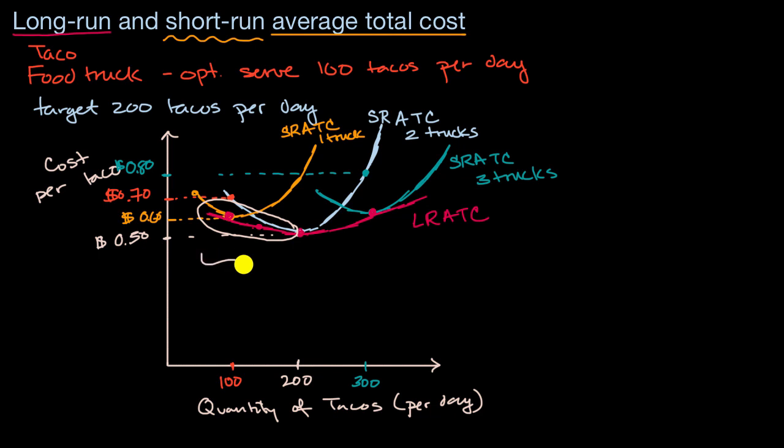And so at this part of our curve, we are experiencing economies of scale. We've talked about where economies of scale can come from. It can come from specialization of labor or even machine specialization.